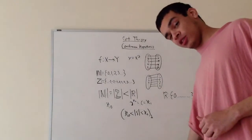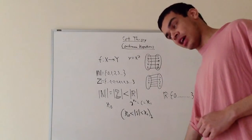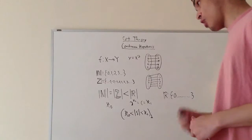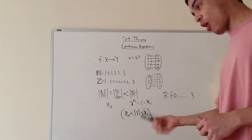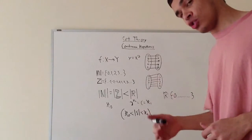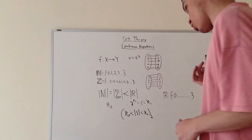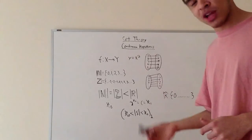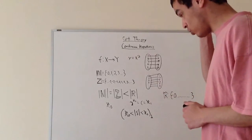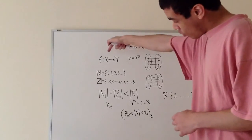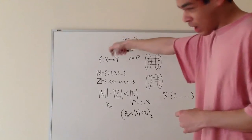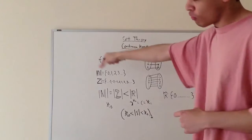Alright, so this will be my video on the continuum hypothesis. I said in my last video that I'm going to show you why the naturals have the same amount of elements as the integers, and that's weird, but that's what's going on. Before I get into that, here I've written an important concept that we need to have down before I go forward.